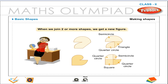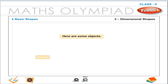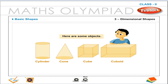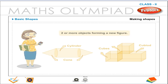Making shapes. When we join two or more shapes, we get a new figure. Three-dimensional shapes. Here are some objects: cylinder, cone, cube and cuboid. Making shapes — two or more objects forming a new figure.